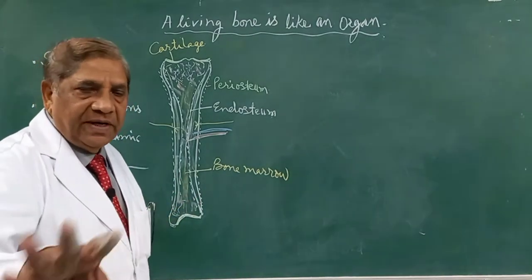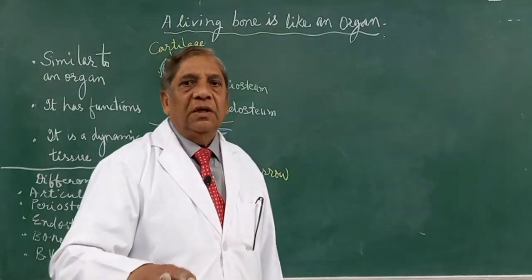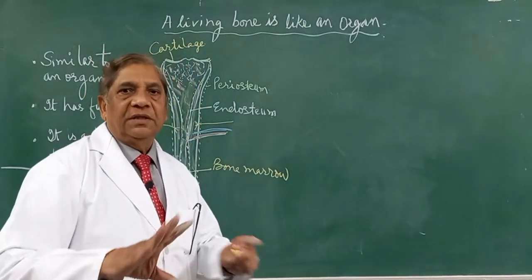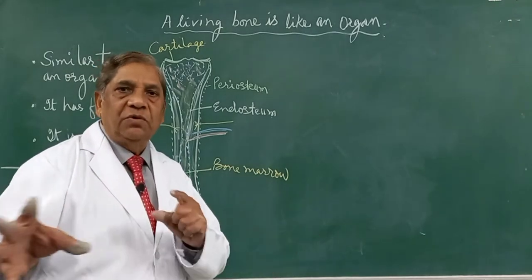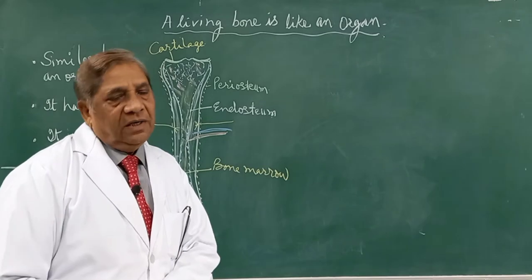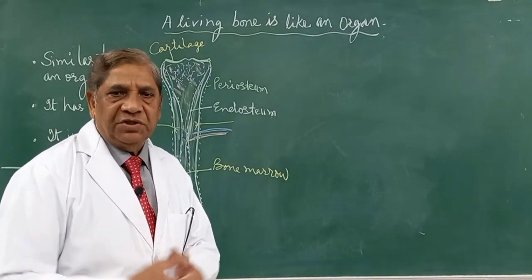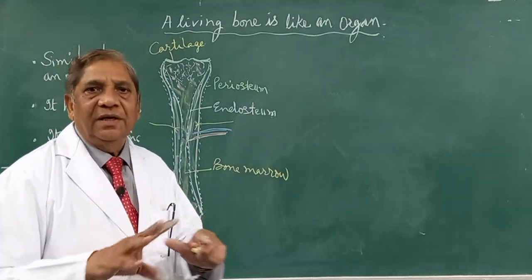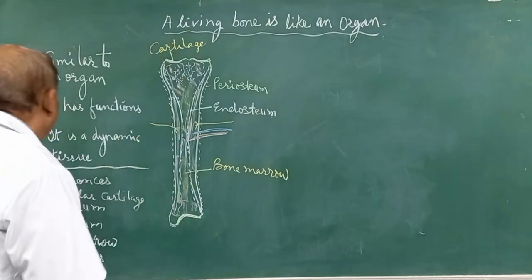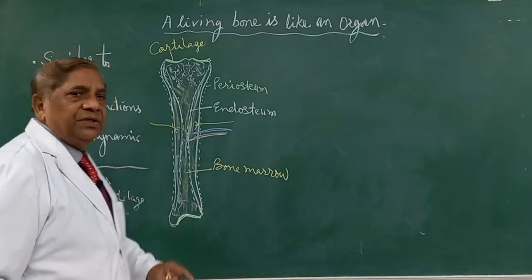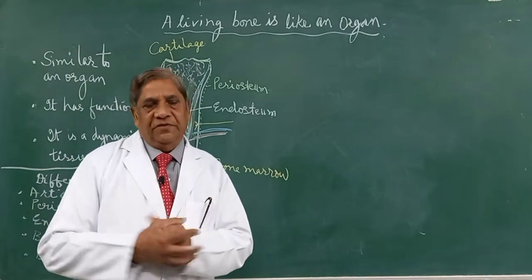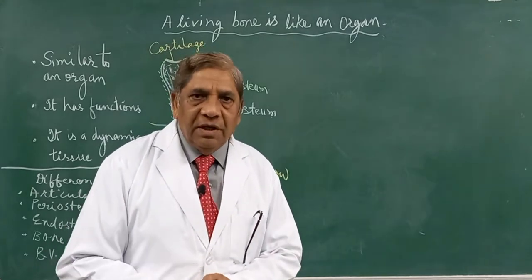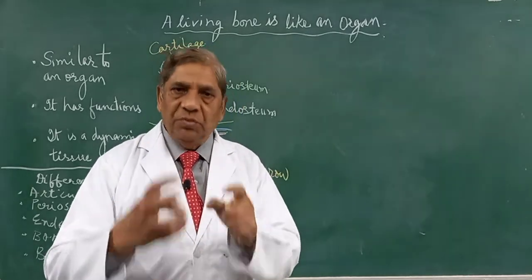Just as the intestine is an organ, all types of bones — long bones, short bones, irregular bones, flat bones, pneumatic bones — they are all living bones and they all act like an organ. Just as the intestine has the function of absorption and digestion, bone as an organ also has many functions.